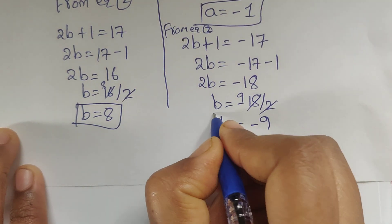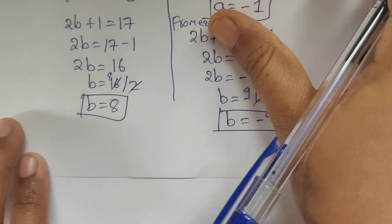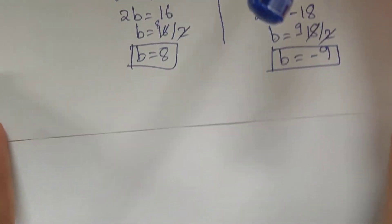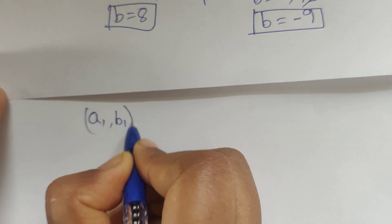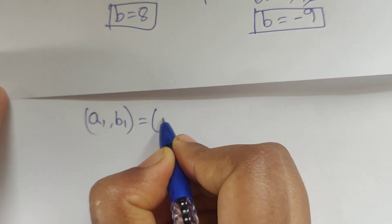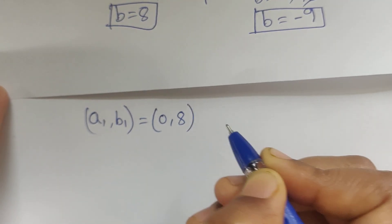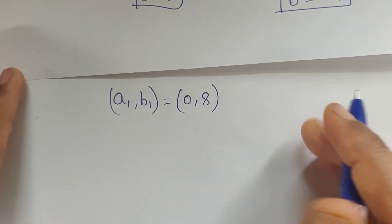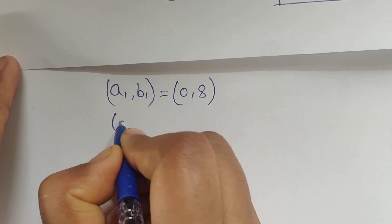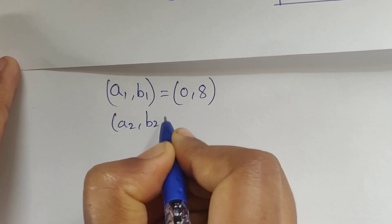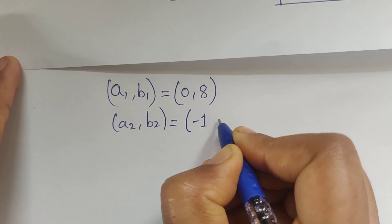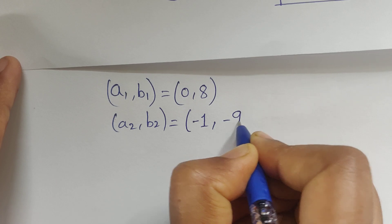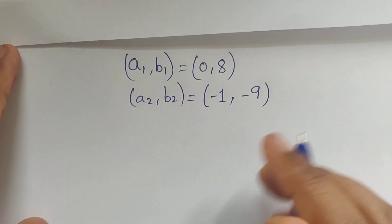So we got two solutions. The first solution is (a1, b1) equals (0, 8). The second solution is (a2, b2) equals (minus 1, minus 9). Now let's verify these values.